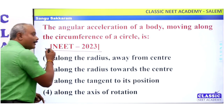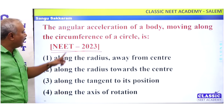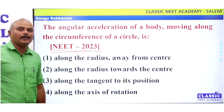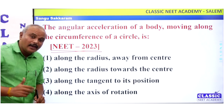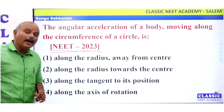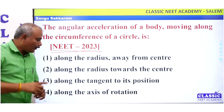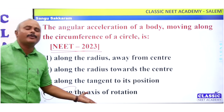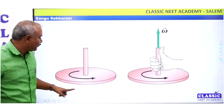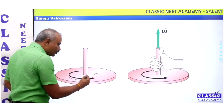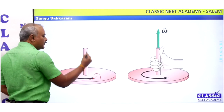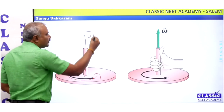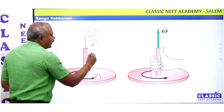In 2023, there is a question in circular motion: angular acceleration of a body moving along the circumference of a circle — angular acceleration, angular displacement, angular velocity — this is the axial direction, along the axis of rotation. The direction of the axis is the axial direction. This is important for NEET.